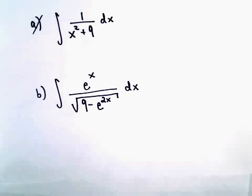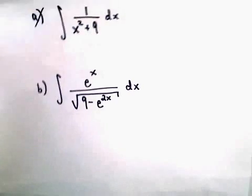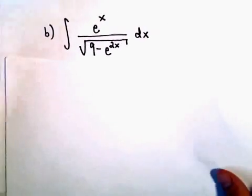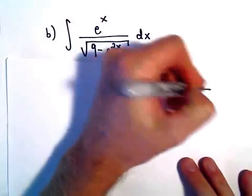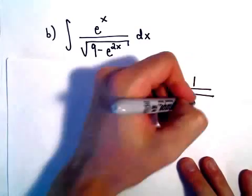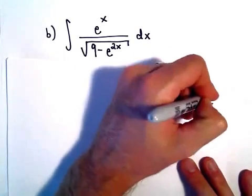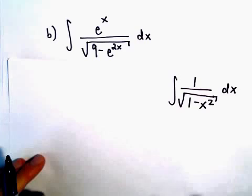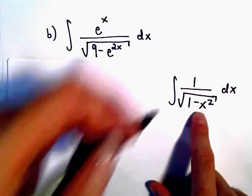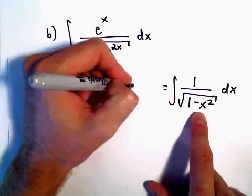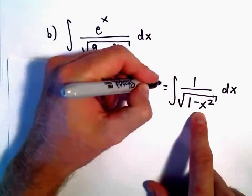So this is one of those problems that certainly has the potential to be confusing for sure. Kind of the thing that this most reminds me of, if you have the square root and 1 minus some variable squared, remember the antiderivative of that is arc sine of x plus c.